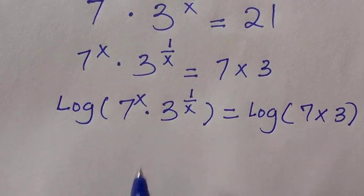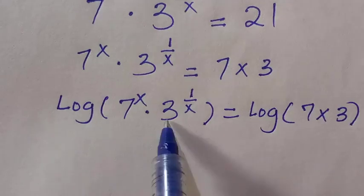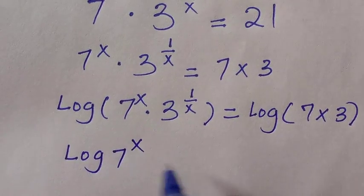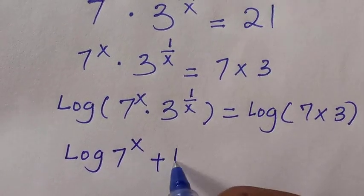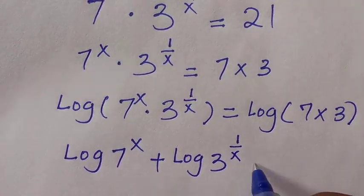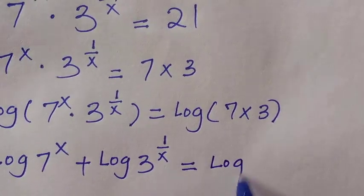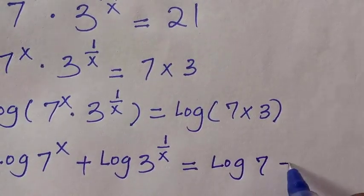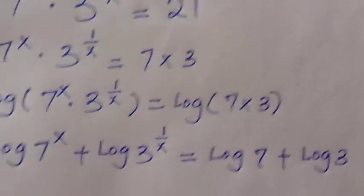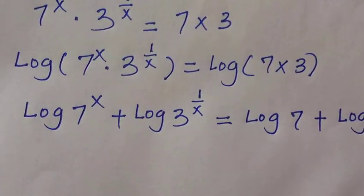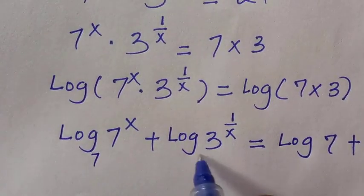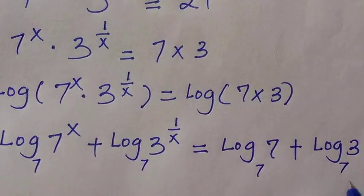By separating the product on the left using the log product rule, we have logarithm of 7 to the power x plus logarithm of 3 to the power of 1 over x equals log 7 plus log 3. I want to introduce base 7 to everything, so we apply base-7 logarithms throughout.